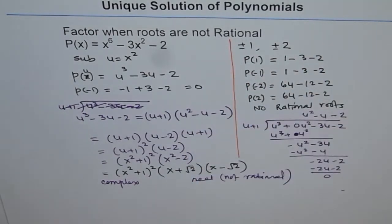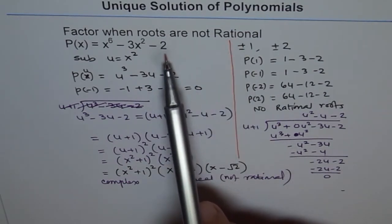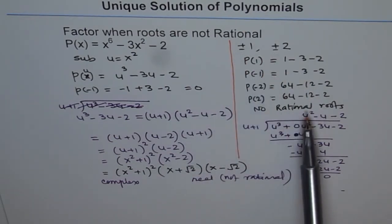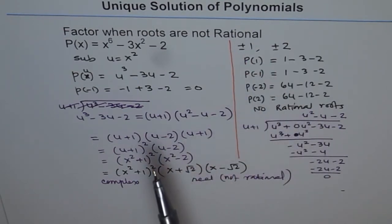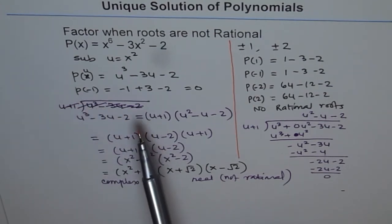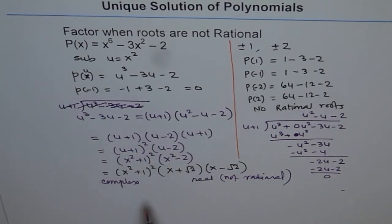To summarize: we first checked for rational roots — the possibilities were plus or minus 1 and plus or minus 2 — and since none gave a remainder of zero, none was a factor. We then substituted u = x squared to change the variable and factored the resulting cubic easily to get our answer, finally realizing the polynomial had both real irrational and complex roots.